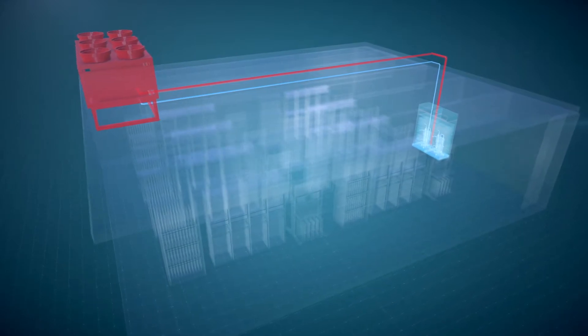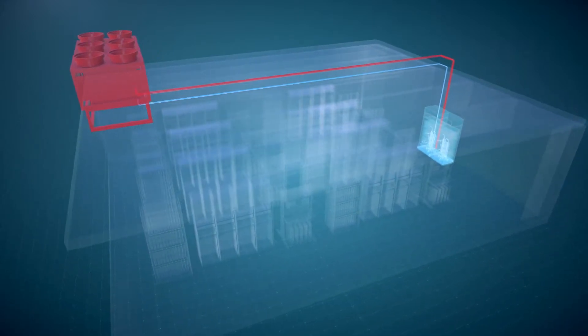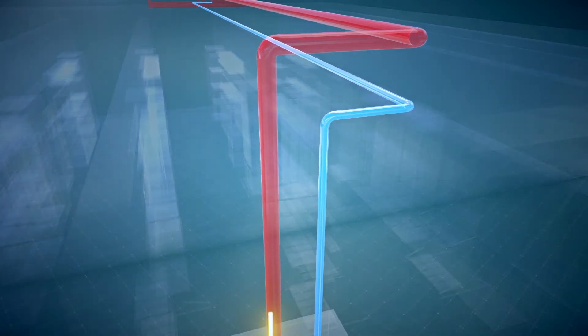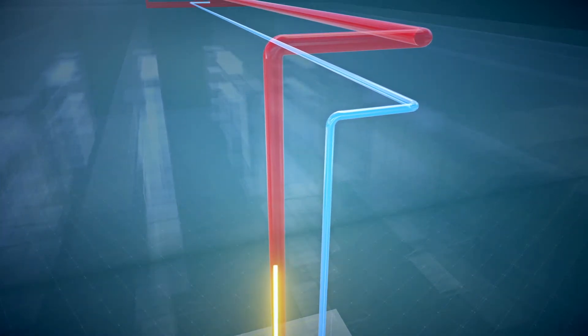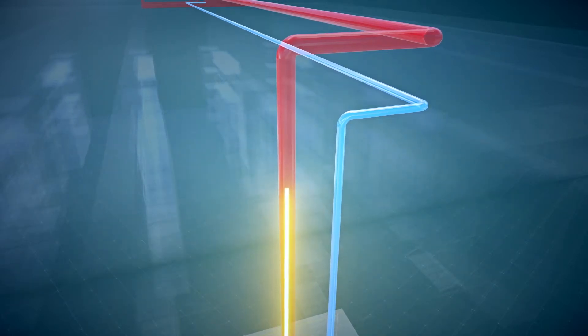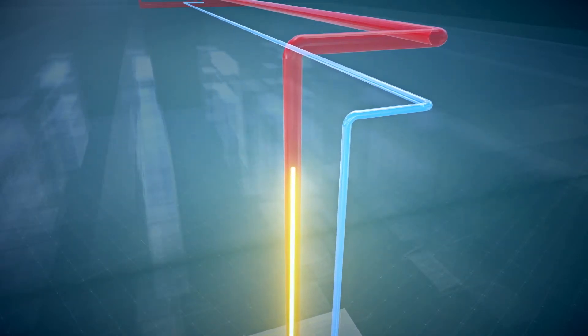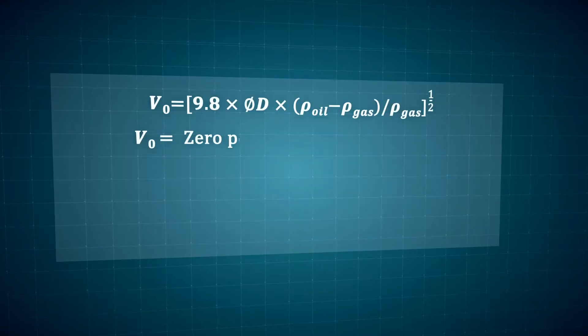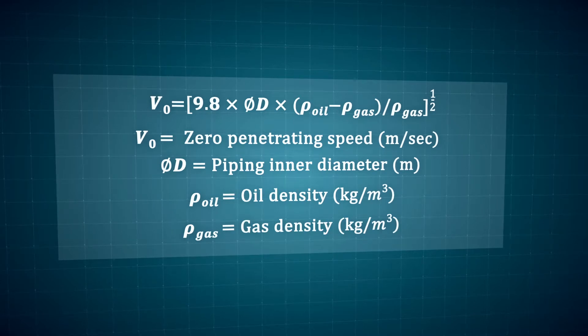In cases where compressors are installed below the condenser in the evaporator, oil will possibly be unable to return to the condenser if the hot gas line is too large and the compressor speed is too low. The minimum speed, A time and B time can be calculated in the same way as the case aforementioned.